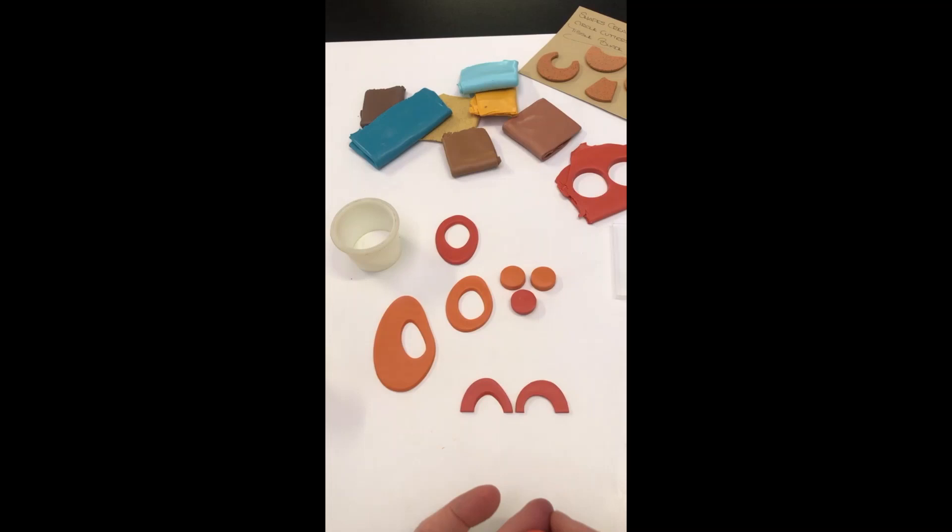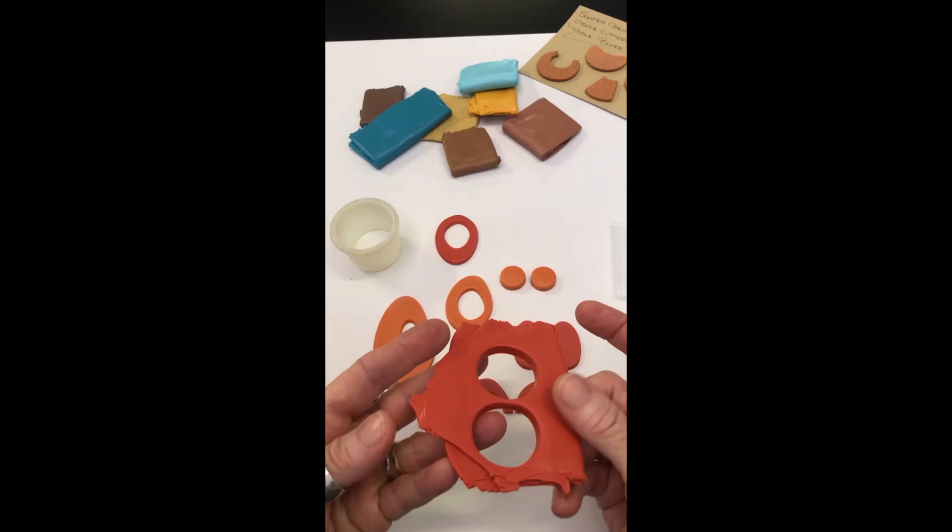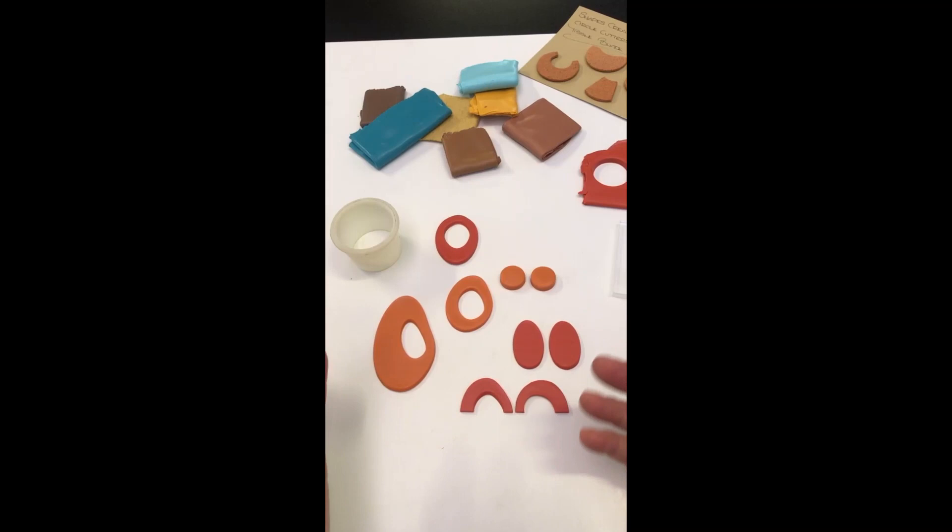Just running this through the pasta machine, no one else is going to have the same pair, the same shapes as you because they're all going to be different. It will also change depending on the thickness of your clay. So if you start with a thicker sheet of clay, you're going to get a different effect. It's also going to change depending on what shapes you're using to cut. So play around with different shapes, play around with oval shapes, with a square cutout in the middle. It's going to change every single time.